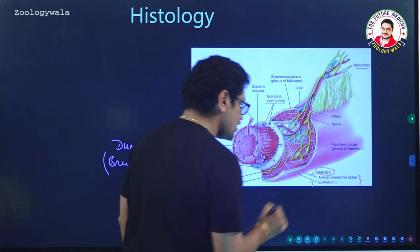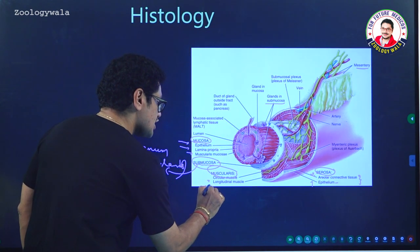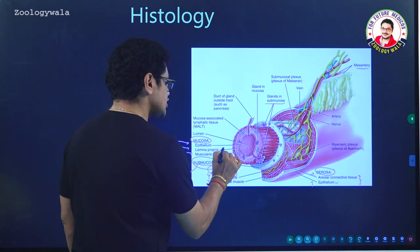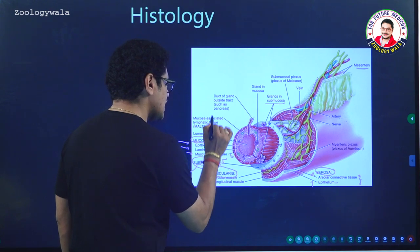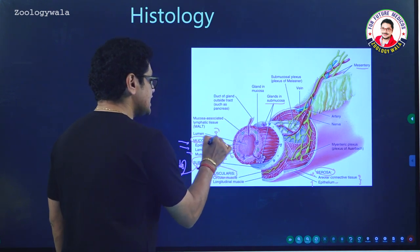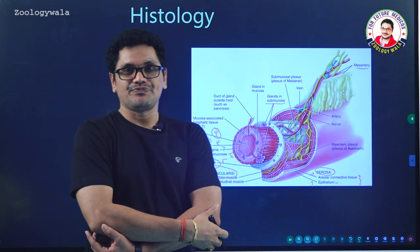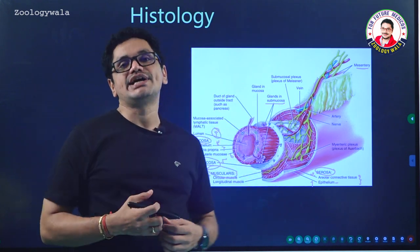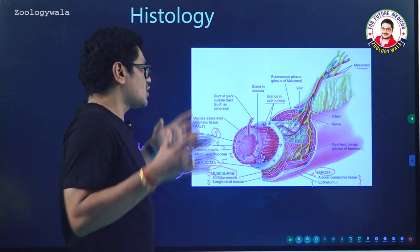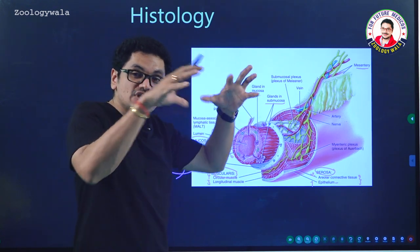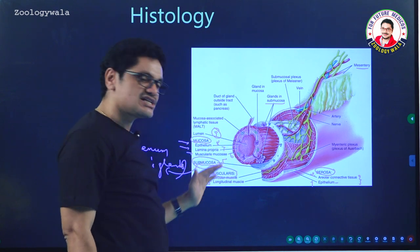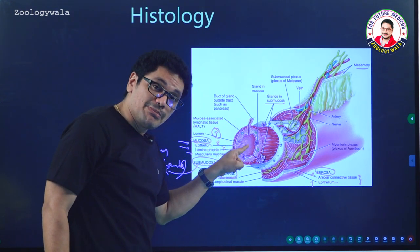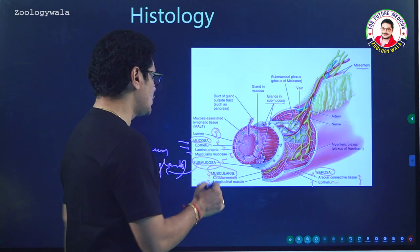To summarize the layers: number one — epithelium; number two — areolar connective tissue; number three — longitudinal muscles; number four — circular muscles; number five — submucosa; number six — muscularis mucosa; number seven — lamina propria; number eight — epithelium; and number nine — the lumen, where food material is stored and actual digestion takes place, due to enzymes released by glands. Submucosal glands are present in the submucosa of the duodenum only.